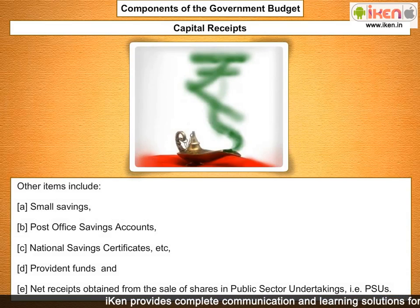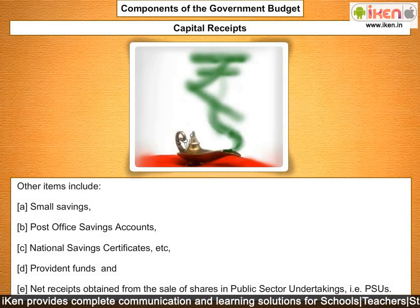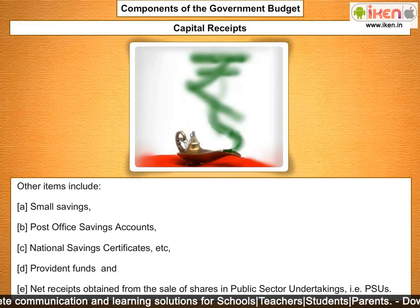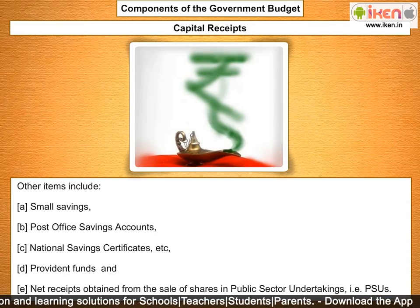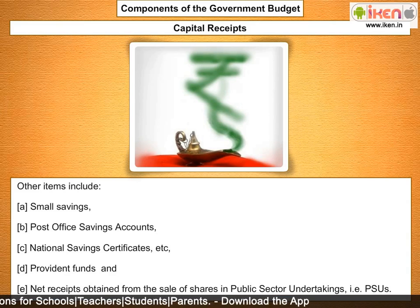Other items of capital receipts include small savings such as post office savings accounts and national savings certificates, provident funds, and net receipts obtained from the sale of shares in public sector undertakings (PSUs).